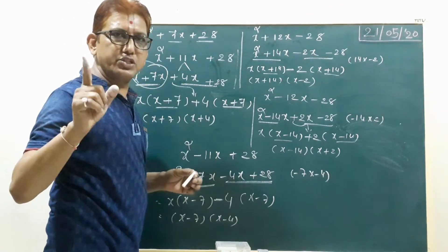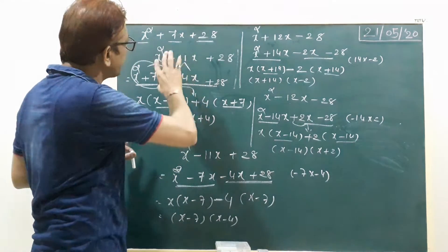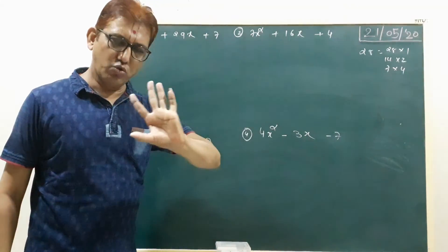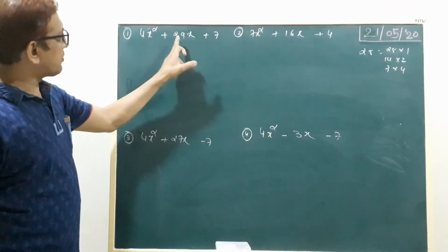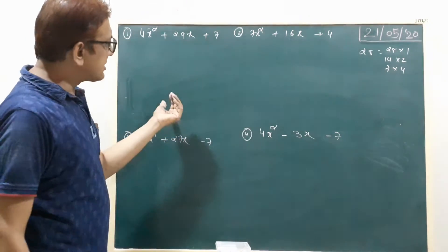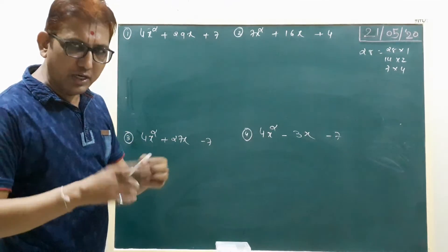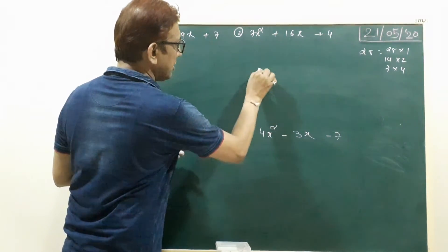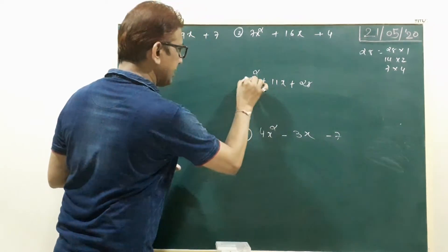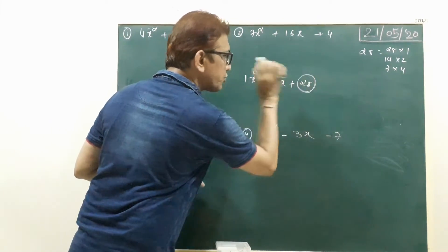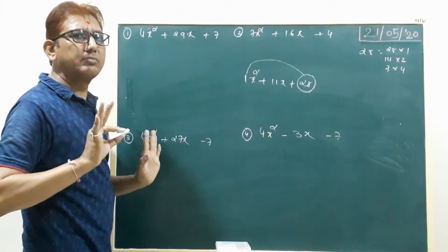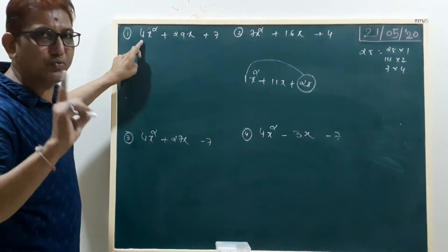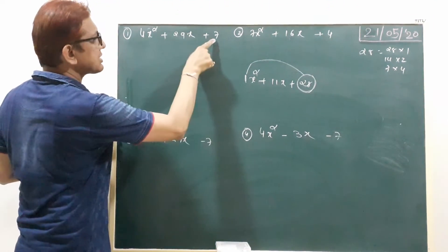Now fourth type: same questions but with a twist — the coefficient of x² is not 1. Example: 4x²+29x+7. In previous examples, coefficient of x² was 1, so we factored only the constant. Now we multiply the coefficient of x² by the constant: 4×7=28, so we find factors of 28 whose sum equals the middle term 29.